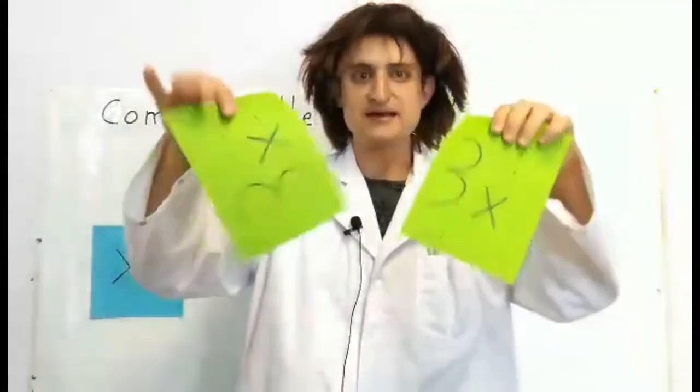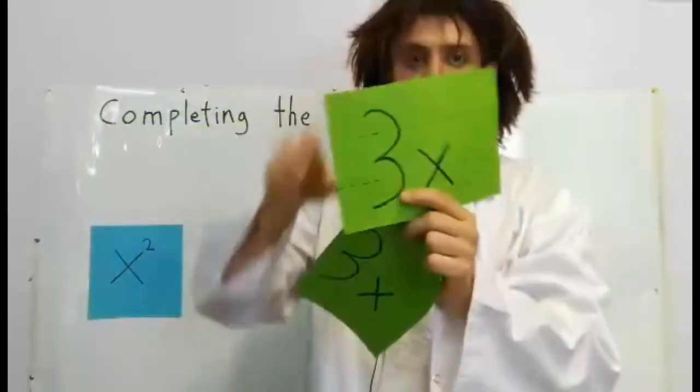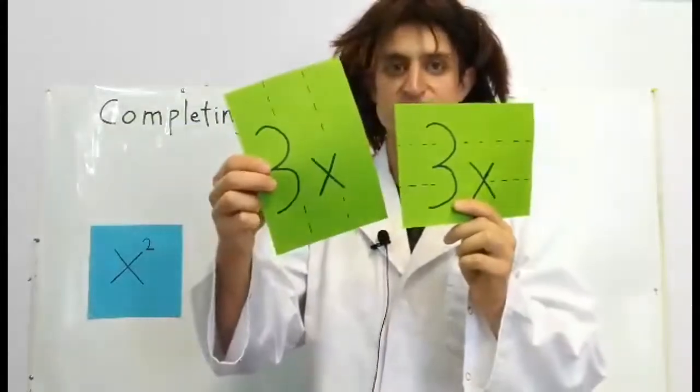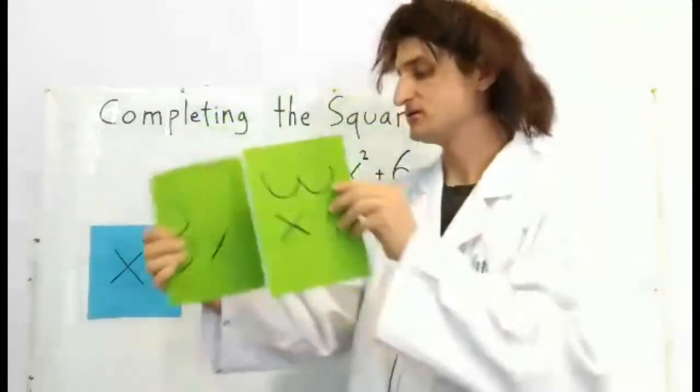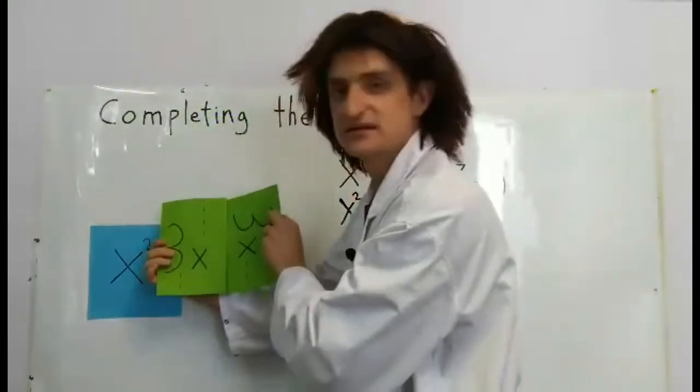Look, we cut it in half. We have 3x plus 3x, just like we had before: 1, 2, 3, 4, 5, 6x.